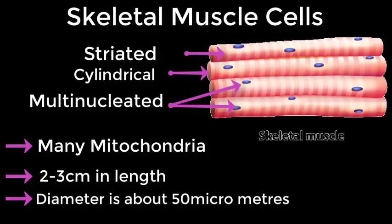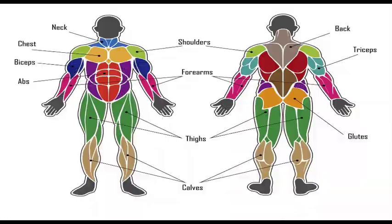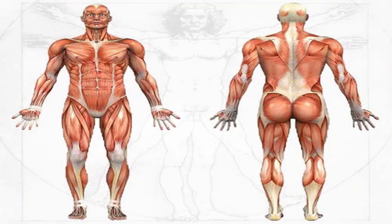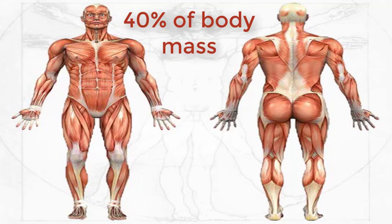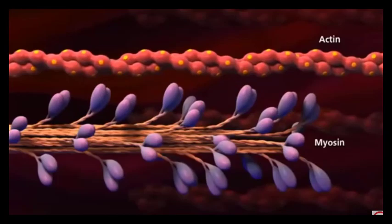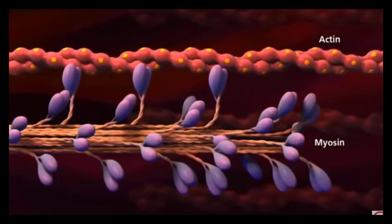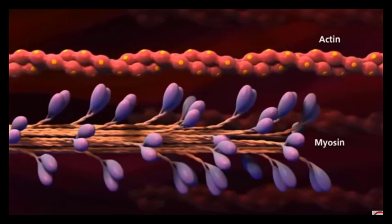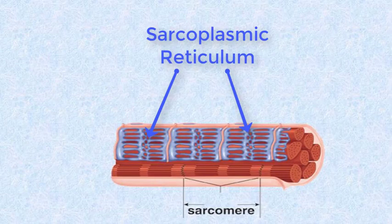The diameter of a skeletal muscle cell is about 50 micrometers. This type of muscle is found on the skeleton, allowing the body to run, ride, and throw. One interesting fact is that skeletal muscles can contain up to 100 nuclei. Skeletal muscles make up about 40% of a person's body mass and there are about 605 skeletal muscle cells. Muscle contraction in striated muscle cells is regulated by calcium ion concentration, which is in turn regulated by a structure known as the sarcoplasmic reticulum — a structure similar to the smooth endoplasmic reticulum of other cell types.